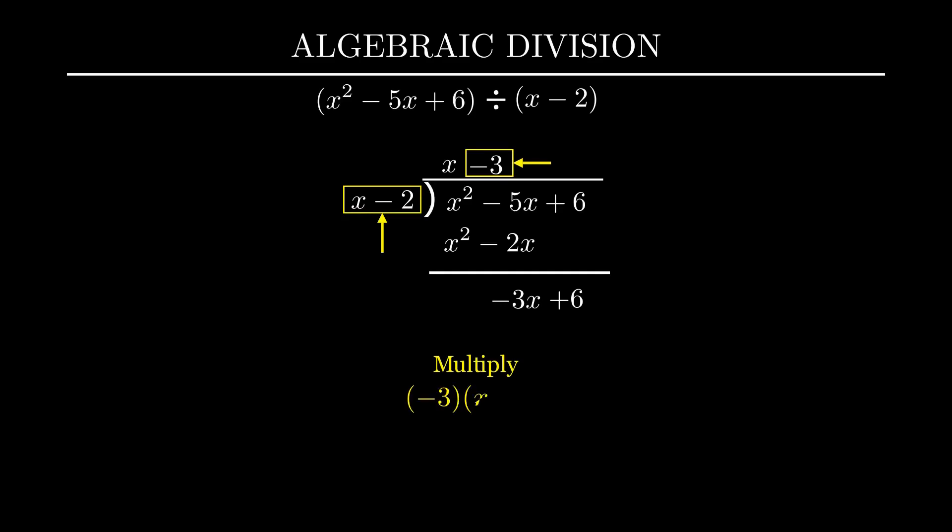-3 into x-2 is -3x+6. Now on subtraction we get a remainder of 0. So our division is complete with the quotient of x-3.